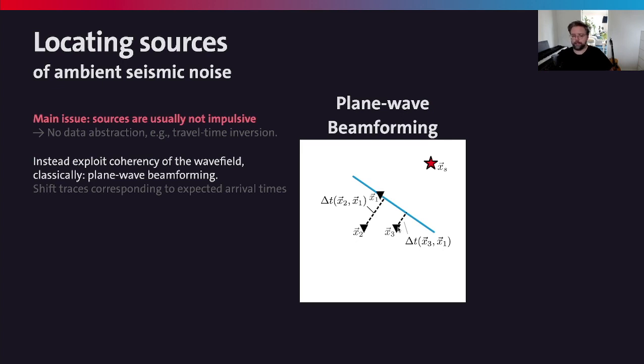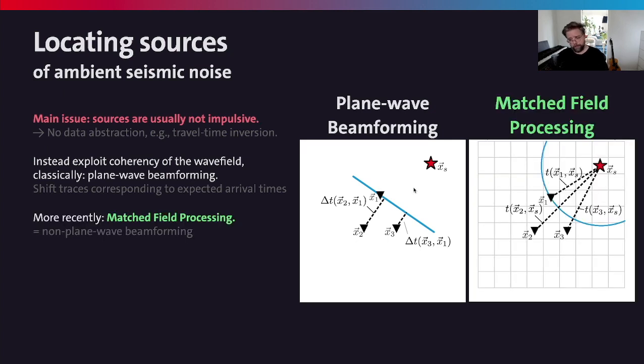The main limitation of plane wave beamforming is that sources have to be far away, and there are resolution problems. To circumvent that, especially the far-away source requirement, we have matched field processing. MFP is exactly the same as beamforming, with the only difference being that in plane wave beamforming we have plane waves, and in matched field processing we have curved wavefronts. This means we no longer test for back azimuth and velocity, but instead for the actual location.